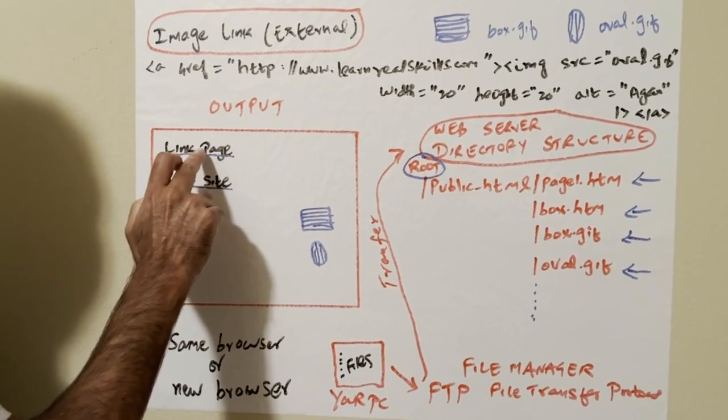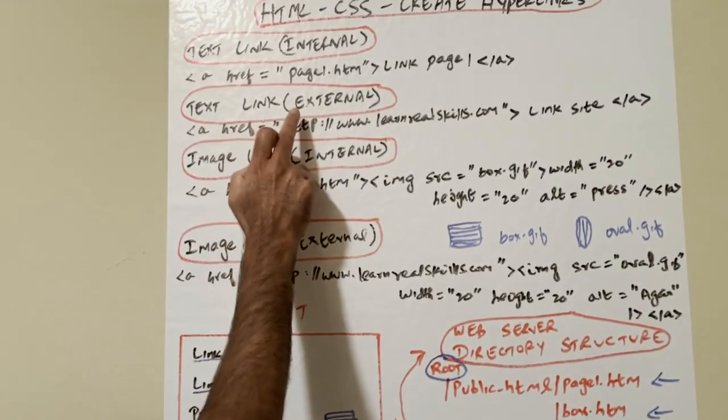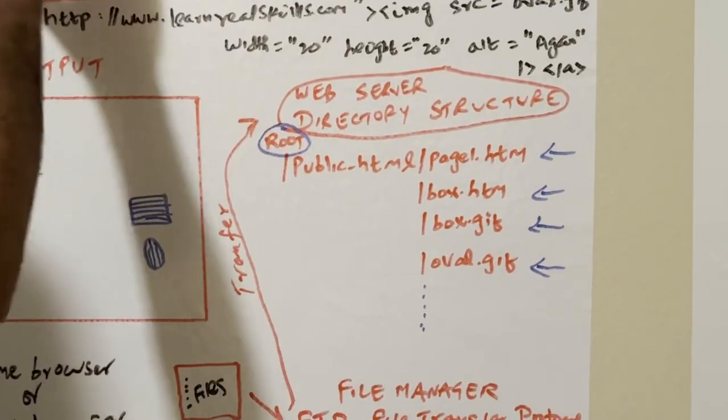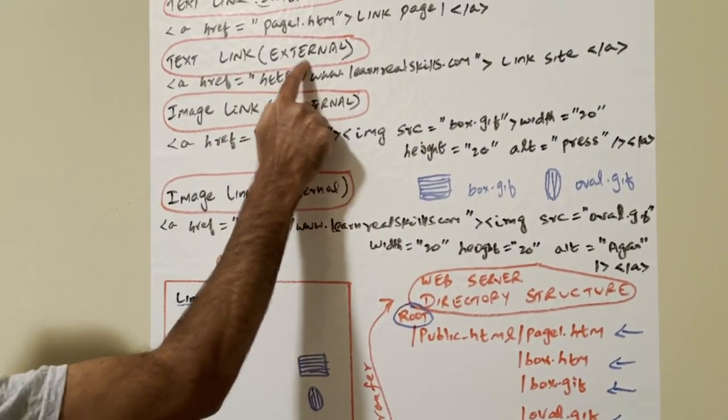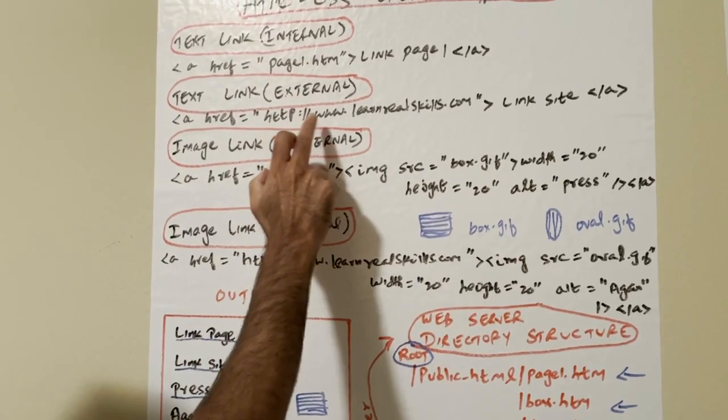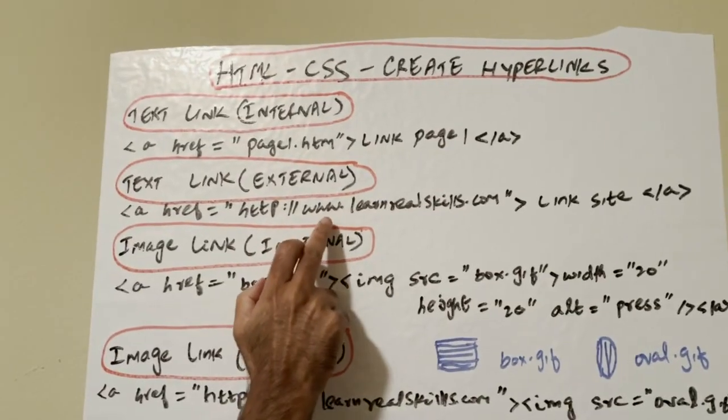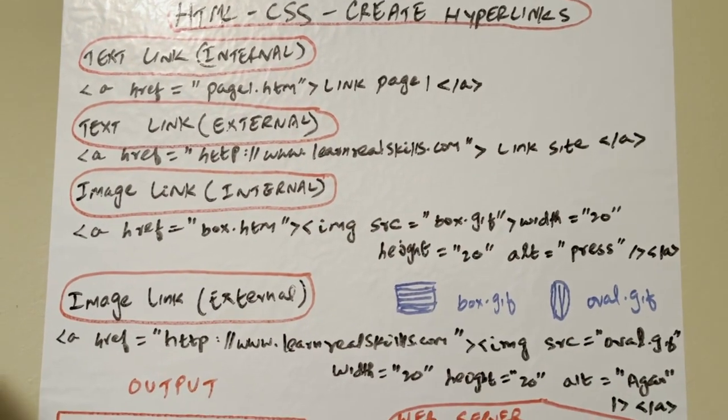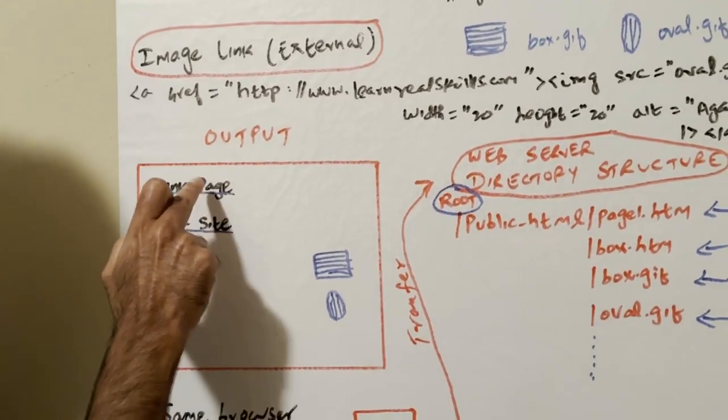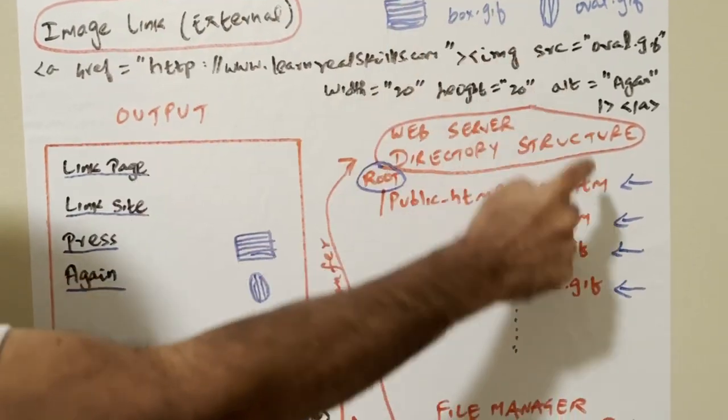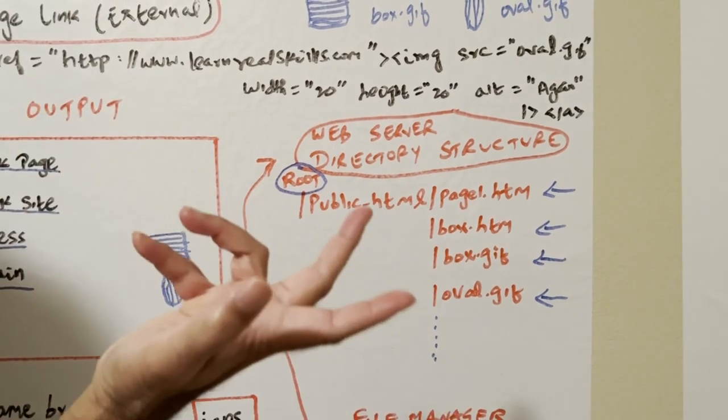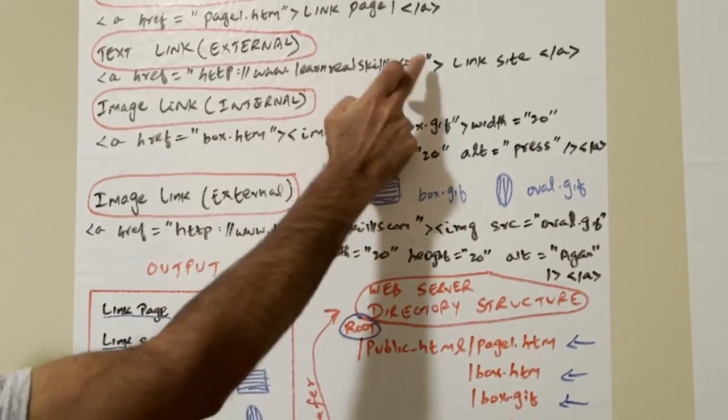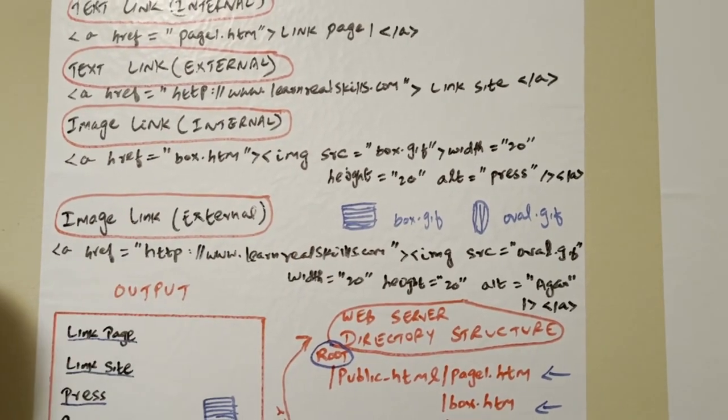Next, we come to the external. Here page1.htm is within the website. Here we link external. See, HTTP, we are connecting to another web browser, so www.learnrealskills.com, link site will be displayed. So when you click here it will go to another page. It will go to the page1.htm. HTML link site means it will go to that website, actual website. It will open a new browser and there are options, usually we open a new browser to display different stuff.